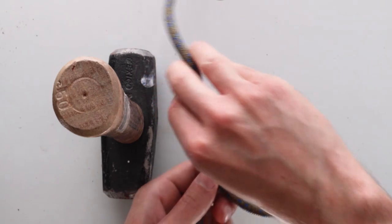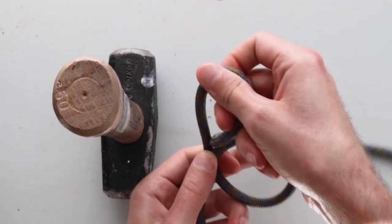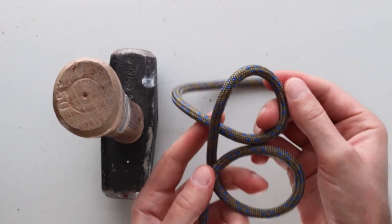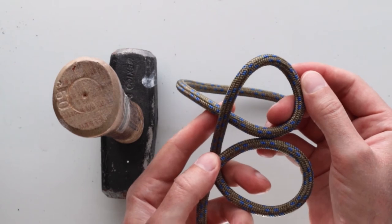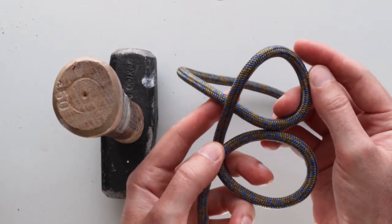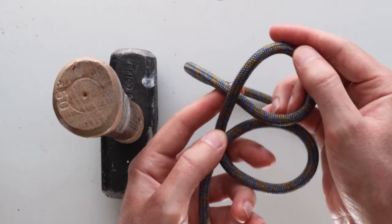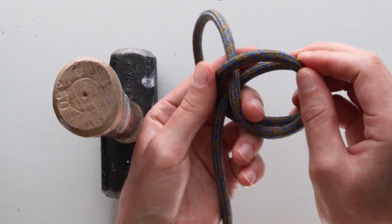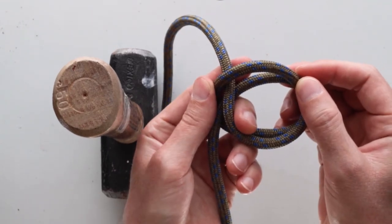Then you're just going to do that same thing a second time to create another loop. The final step is just to take the most recent loop you made, the second loop, and pass it over on top of the first loop you made.